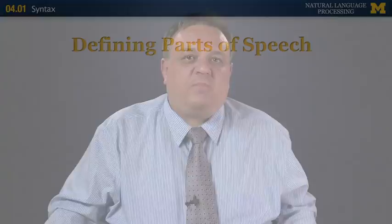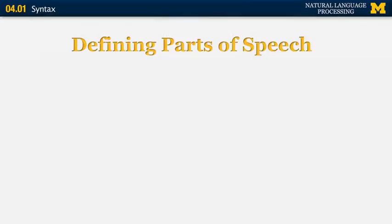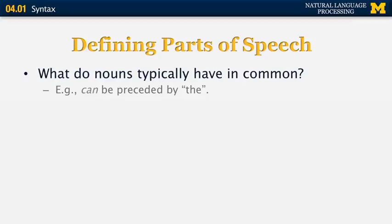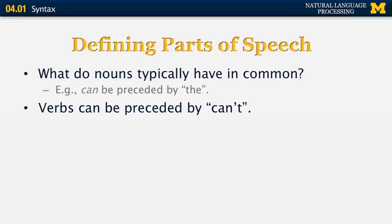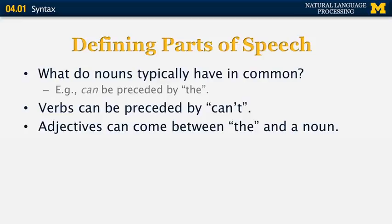Let's see how we can define parts of speech from a syntactic point of view. The first is nouns — the most common type of words. One property most nouns have is that they can be preceded by the word the, so I can say the cat or the house. Verbs, on the other hand, cannot be preceded by the, but they can be preceded by can't — so sleep is a verb, and I can say can't sleep. Adjectives are words that come between the and the noun — so I can say the cluvius wog.